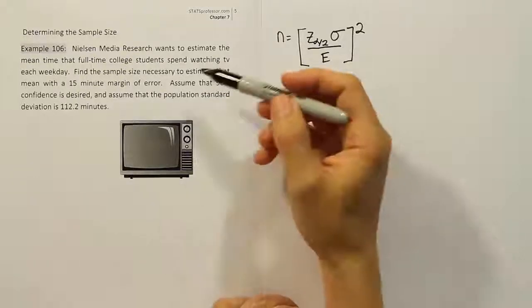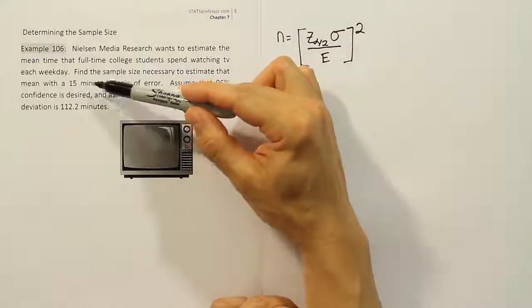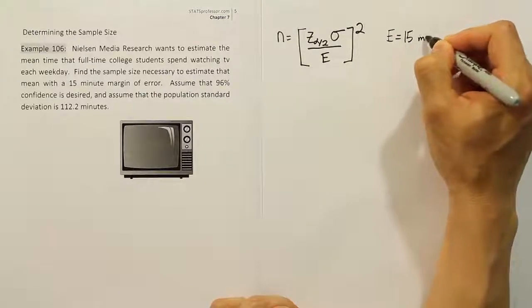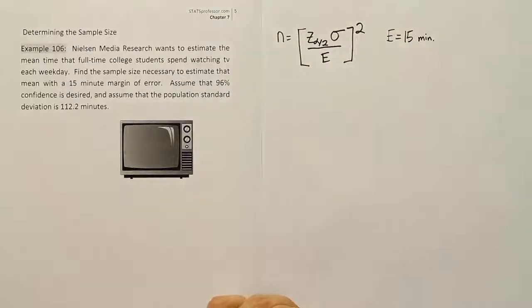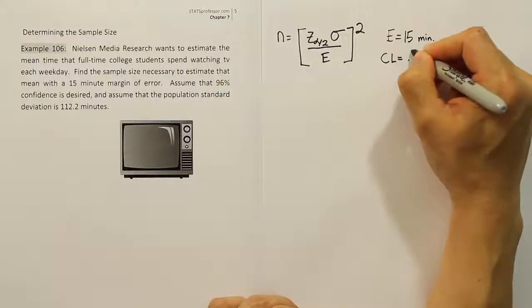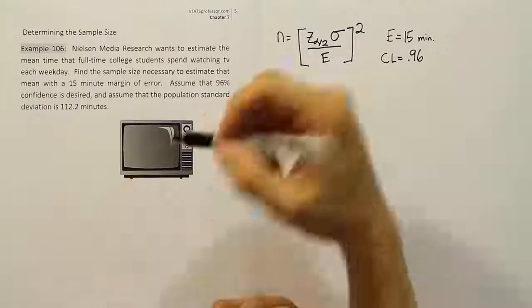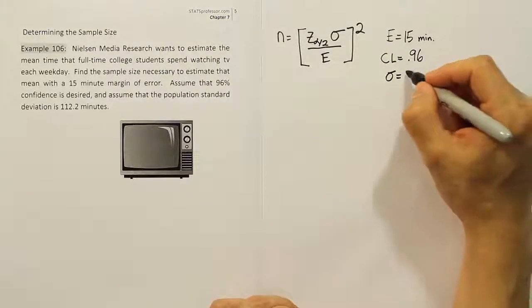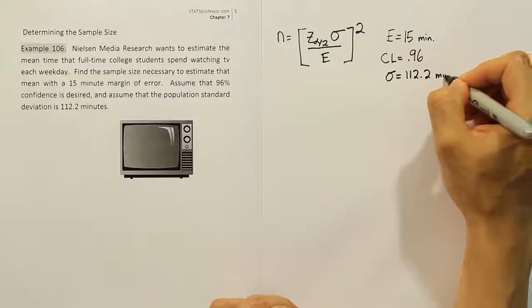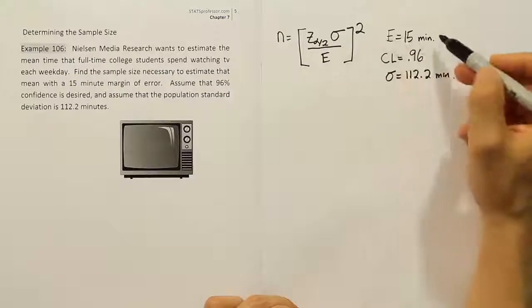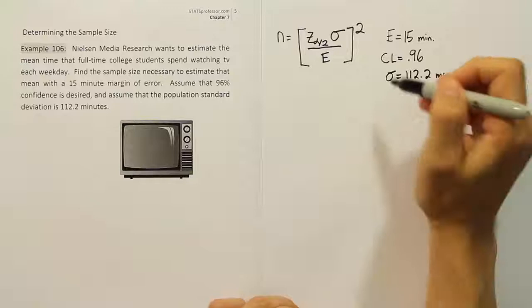Let's look at what's given in the problem. We want a 15-minute margin of error, so E = 15 minutes. The confidence level is 96% or 0.96. The population standard deviation σ = 112.2 minutes. Notice the units should match for E and σ so they cancel out in the formula.